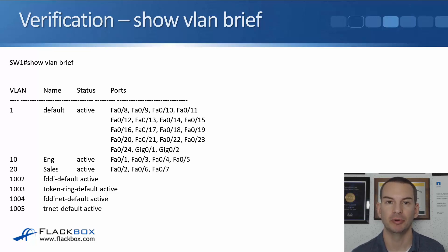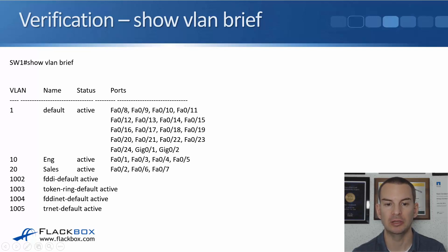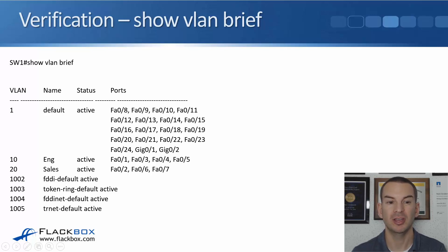To verify the configuration, the best command is 'show vlan brief'. This shows all VLANs available on the switch and which ports are in which VLAN. After our configuration, interfaces FastEthernet 0/1, 0/3, 0/4, and 0/5 are in VLAN 10 (eng), and interfaces 0/2, 0/6, and 0/7 are in VLAN 20 (sales). All other physical ports remain in the default VLAN 1.